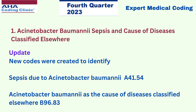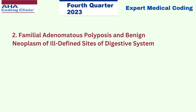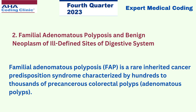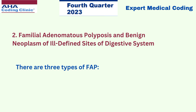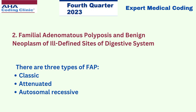These two new codes were created. The next coding clinic is familial adenomatous polyposis, which is a rare inherited cancer predisposition syndrome characterized by hundreds to thousands of precancerous colorectal polyps. There are three types of FAPs: classic, attenuated, and autosomal recessive.